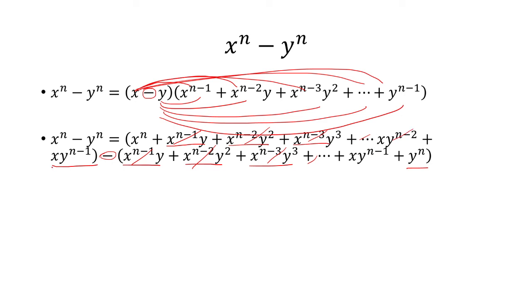And then once you reach here, x to the n minus 1, x to the n minus 1, that's also going to cancel.